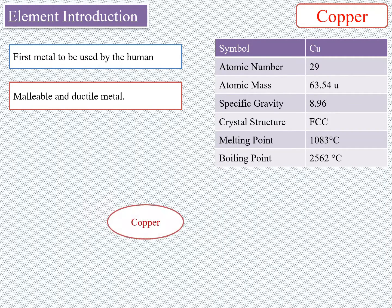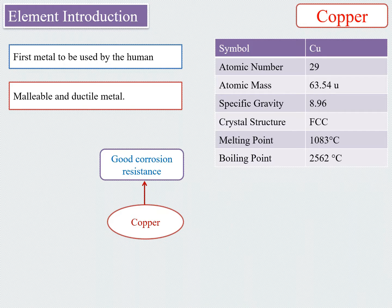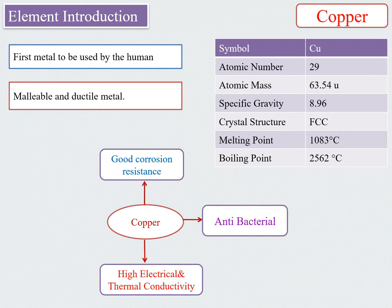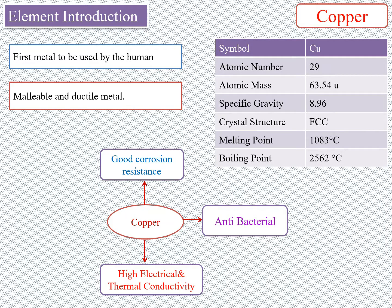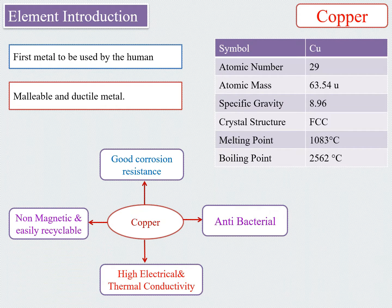Now we will look at a few important properties of copper relevant to its applications. Copper is a good corrosion-resistant metal — a green layer forms on the surface which protects it from further corrosion. Copper is also antibacterial; copper compounds have been used as bacteriostatic agents, useful to slow down the growth of bacteria, which is one reason it is used in utensils. Copper is an excellent conductor of electricity and also has very good thermal conductivity. Copper is non-magnetic in nature and is easily recyclable.